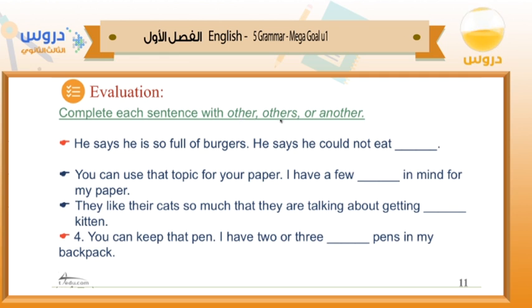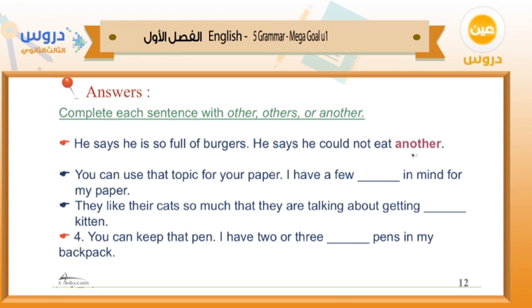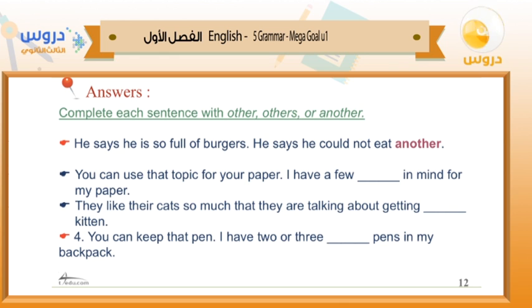Now let's evaluate what we've studied. Complete each sentence with 'other,' 'others,' or 'another.' Number one: 'He says he's so full of burgers — he couldn't eat ___.' The answer is 'another' — used as a pronoun meaning an additional thing of the same kind, i.e., another burger. Number two: 'You can use that topic for your paper. I have a few ___ in mind for my paper.' The answer is 'others' — a pronoun, since there's no noun following it.